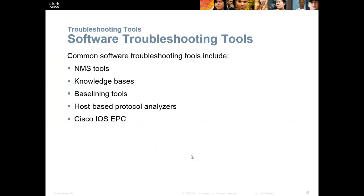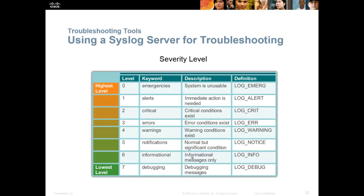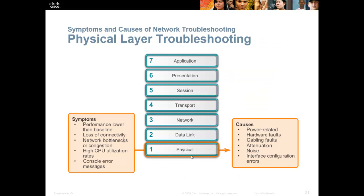Alright, network troubleshooting. Some common tools — obviously there are knowledge bases out there. We want a baseline. There are protocol analyzers, Cisco IOS EPC. Common hardware tools include network analysis modules, digital multimeters, cable testers, and cable analyzers. Remember, your syslog on the router has different levels: emergencies, alerts, criticals, warnings, notifications. For the CCNA, you will probably need to know the order that stuff starts in. Make your own acronym with E-A-C-E-W-N and you're all good.